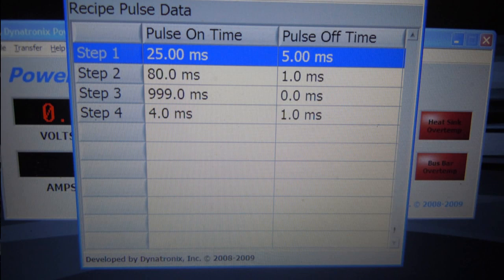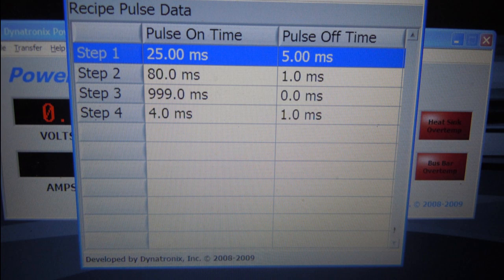The power supply can be programmed for straight DC or pulsing with on times ranging from 4 to 999 milliseconds, off time from 0 to 909 milliseconds. An additional benefit of Thermal Technology's power supply is the ability to change the pulse patterns during the run to get the maximum benefit during various stages of sintering.